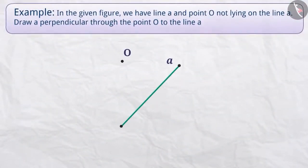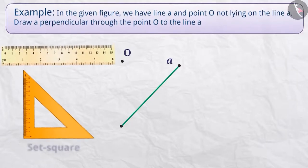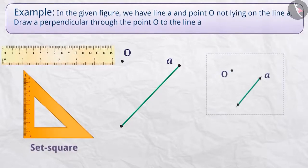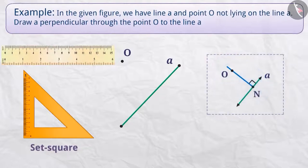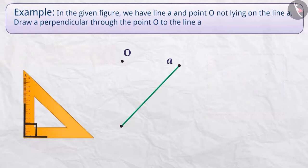In the given figure, we have a line A and a point O not lying on the line. Draw a perpendicular through the point O to the line A. Using a ruler and a set square, draw a perpendicular line segment O-N that passes through point O.